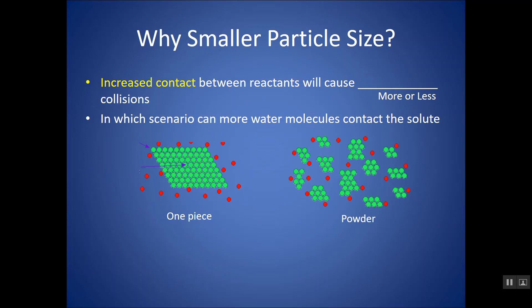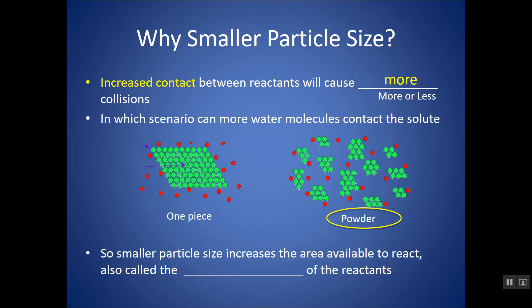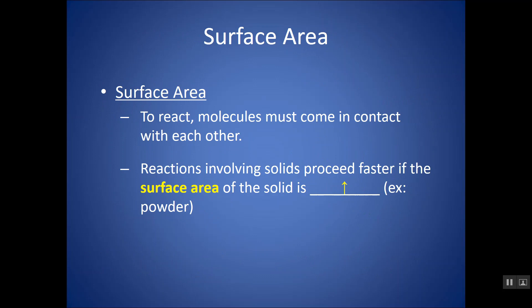If I look at particle size, any time I have increased contact between my reactants, I'll have more collisions. Looking at two solids of essentially the same mass but broken up differently: one big piece has limited contact with the other reactant — all the area inside is hidden. Whereas if I break it into smaller pieces, I now have increased areas of contact. The smaller particle size given the same mass will actually react faster. Powders are always going to react faster than larger pieces. Smaller particle size increases the area available to react, which we call the surface area. So by making the particle size smaller, we're making the surface area bigger, and that's why it reacts faster.